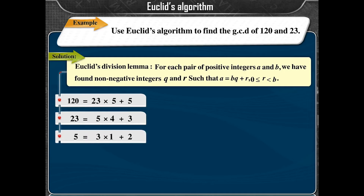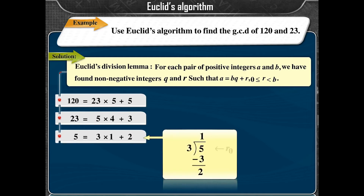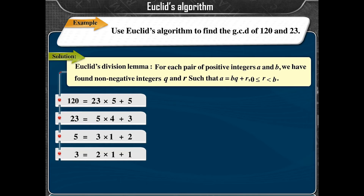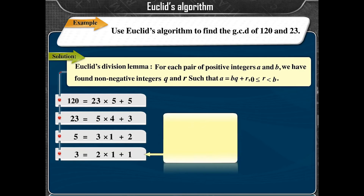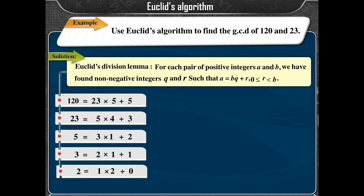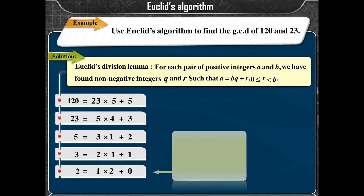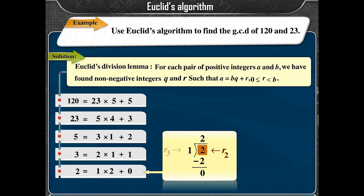Continuing: 5 = 3×1 + 2, where R0 = 5, R1 = 3, Q2 = 1, R2 = 2. Then 3 = 2×1 + 1, where R1 = 3, R2 = 2, Q3 = 1, R3 = 1. Then 2 = 1×2 + 0, where R2 = 2, R3 = 1, Q4 = 2, R4 = 0.